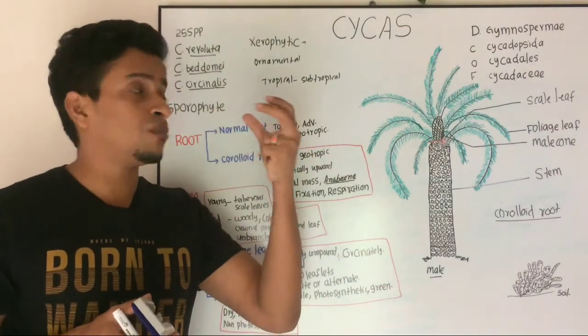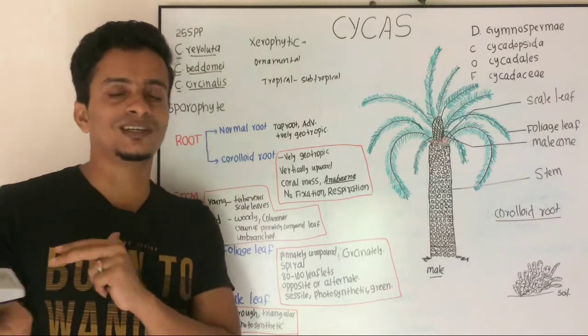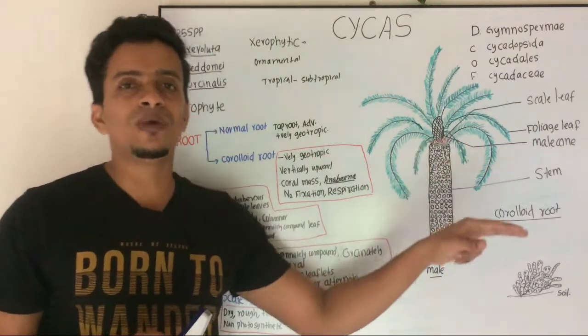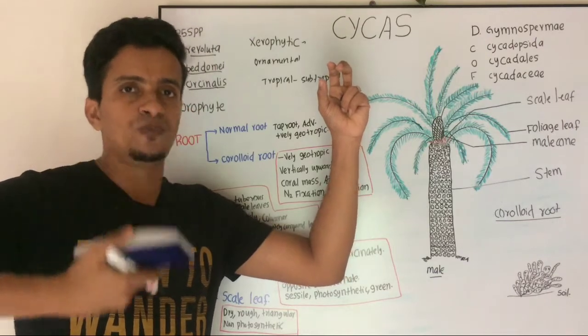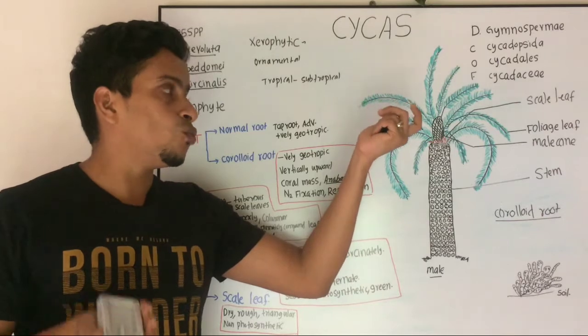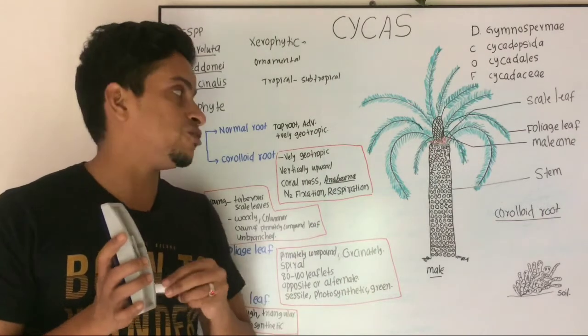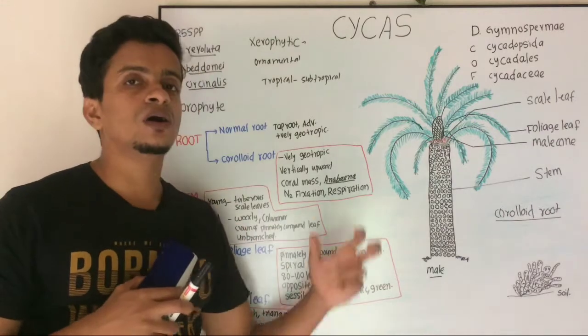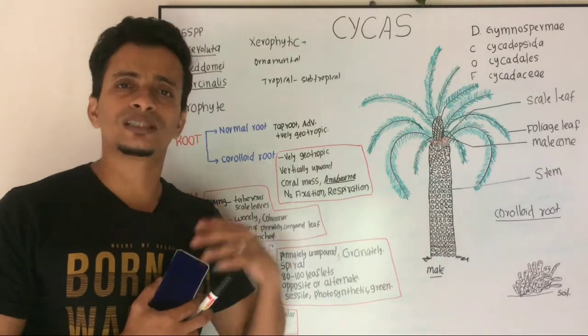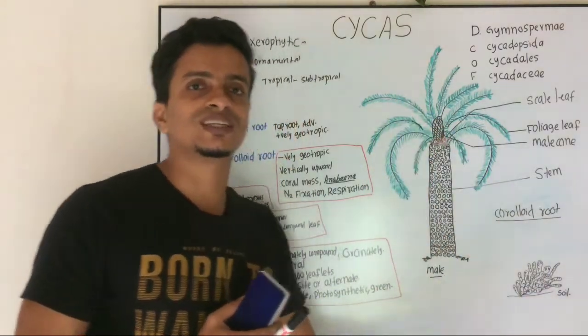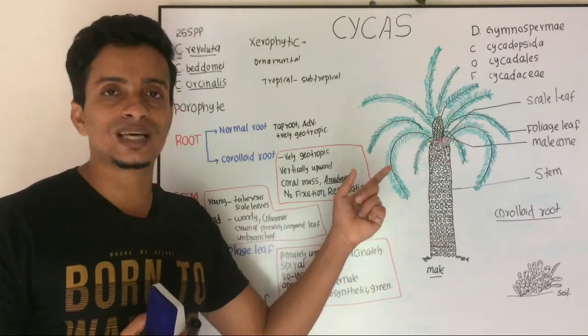Up to their reproductive age, there is no difference in the different plants. But after their vegetative period, coming to the reproductive period, when they develop their reproductive structures, you can identify male and female plants separately. If the plant produces male cone, then that plant can be called as male plant. If it produces female cone or megasporophylls, it's the female cone.